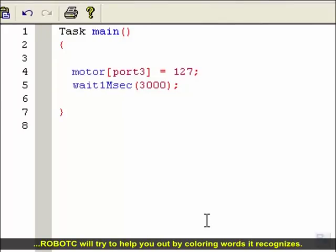Note that as you type, Robot C will try to help you out by coloring words it recognizes. If a word highlights in a different color, it means Robot C knows it as an important word in the programming language.